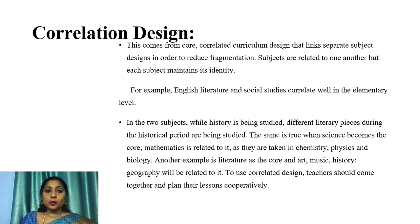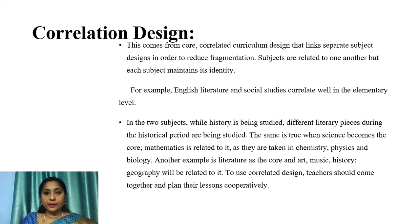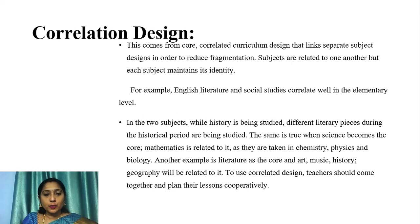Now let us move on to correlation design. This comes from the correlated curriculum design that links separate subject designs in order to reduce fragmentation. Subjects are related to one another, but each subject maintains its identity. For example, English literature and social studies correlate well at the elementary level. While history is being studied, different literary pieces from those historical periods are also studied.